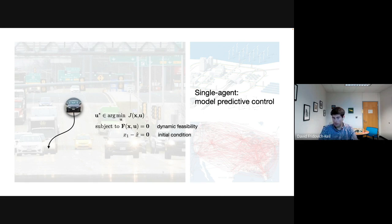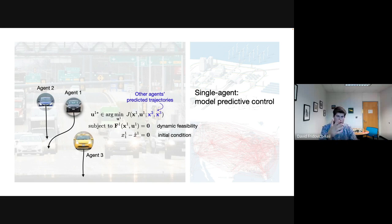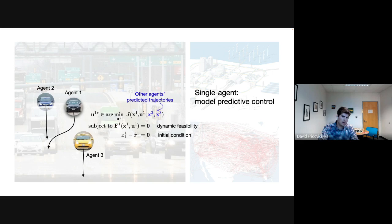Since we're on the road and know there are other cars out there, we'll look at a few other agents in the scene and make some predictions about what they're going to do — highlighted in blue. Maybe a machine learning model tells me agent two is going to go straight, agent three is going to go straight. That prediction enters my optimization problem somewhere in the objective or perhaps as hard collision avoidance constraints. This is still a standard nonlinear program — nothing fancy, just textbook stuff.